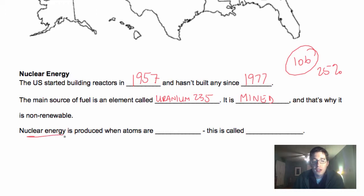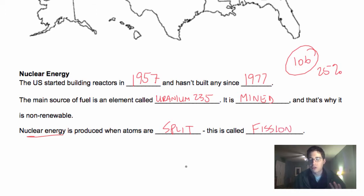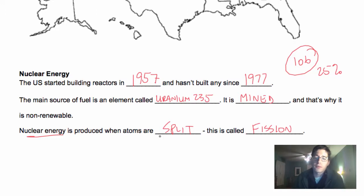Nuclear energy — we're going to have a section specifically on nuclear reactions — but it's produced when atoms are split apart. This is called fission. There are two kinds of nuclear reactions: fission and fusion. Fusion is what happens inside of stars — it's when two atoms come together and form one atom. Fission, on the other hand, is what we do in our nuclear reactors: we take uranium atoms, split them, and harness the energy that comes out from that.